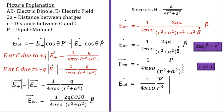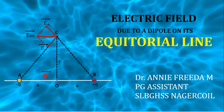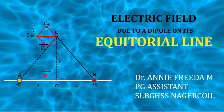This minus sign denotes that the direction of dipole moment is opposite to that of the electric field. You need not write the intermediate equations for the exam as they are for your understanding. Hope you have understood very well. In this video we have seen what is the electric field due to a dipole on its equatorial line. Thanks for watching.